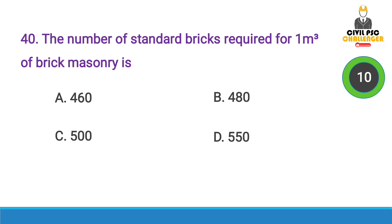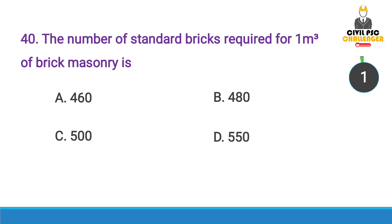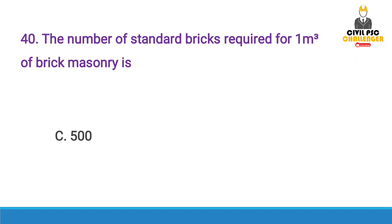Next question: The number of standard bricks required for 1 cubic meter of brick masonry is — Answer option C, 500.